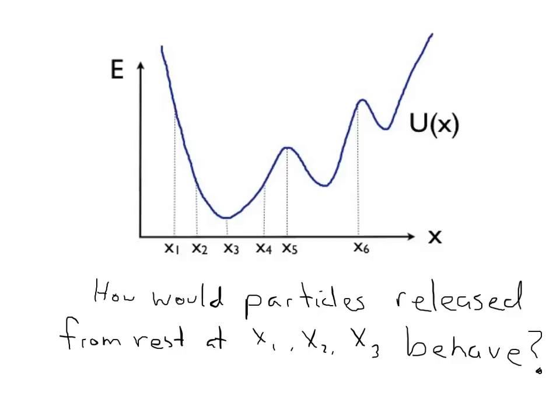Now we can explore this further by putting up a potential graph and asking how particles released at different points would behave. This graph, just like the last one, has the blue line as potential energy as a function of position, the y-axis showing total energy, and the x-axis showing position. I've labeled a bunch of different points — x1 through x6 — and we want to know how a particle released at various points would behave. First, let's take a look at the general behavior of this graph.